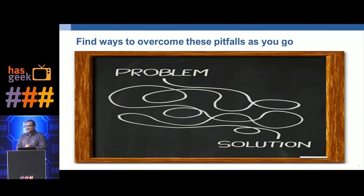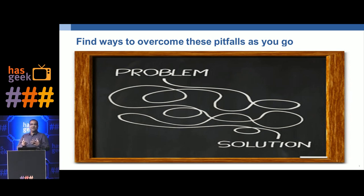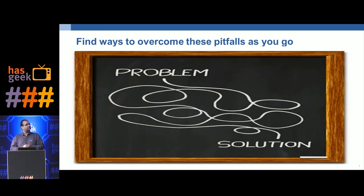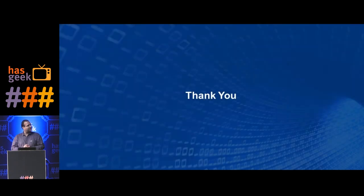I intentionally kept the solutions we used to get through these pitfalls out of scope for this talk. My perspective is that every context is very different — since we're talking about people and business problems, each solution has to be relevant to that context. There's no silver bullet. As you go along, find the solution relevant to your problem. I just wanted you to be aware of some of the challenges you can face in a financial or enterprise organization. That's what I have — thank you.